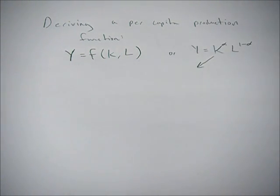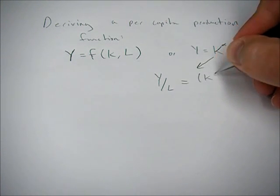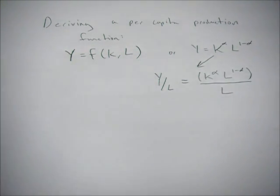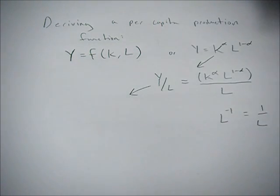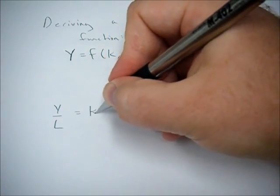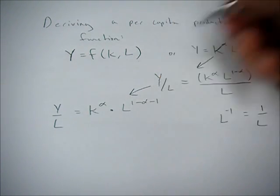So here, let's take this functional form — which is generic because it has variables instead of numbers — and divide everything by l. The trick here is to remember some algebra rules. Because we have l in the denominator, 1 over l is equal to l to the minus 1. So we can rewrite this: y over l is going to equal k to the alpha times l to the 1 minus alpha minus 1.